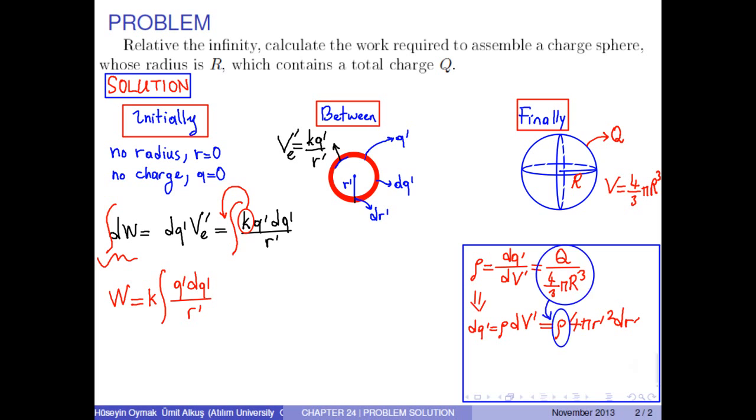Since rho is Q over 4/3 times pi times R cubed, we have dq' as Q over 4/3 times pi times R cubed times 4 pi times r' squared dr'.